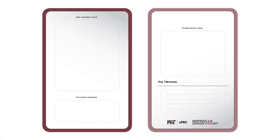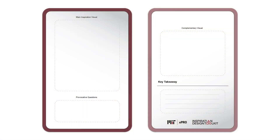Now let's look at the template and format of the toolkit. On the screen, you see two images. One is for the front side of the card, and another is for the back side. For the front side, the upper section contains the main exploration visuals, and accordingly there is a provocative question to help trigger your thinking. On the back side, there are complementary visuals with explanation text, and a key takeaway to highlight the learning point for the chapter.